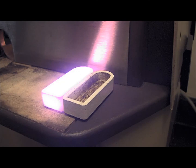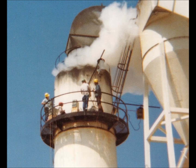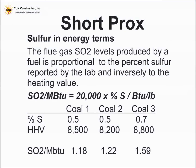With the short prox, I also get the sulfur. I can measure the percent sulfur in the coal, and that combined with the higher heating value allows me to calculate SO2 emissions. I can look at what the uncontrolled SO2 emissions are for various coals, and you can see that in pounds of SO2 per million BTU those numbers could be quite different across different coals.